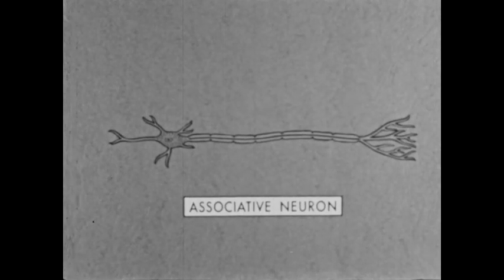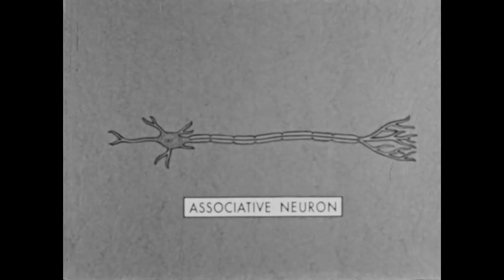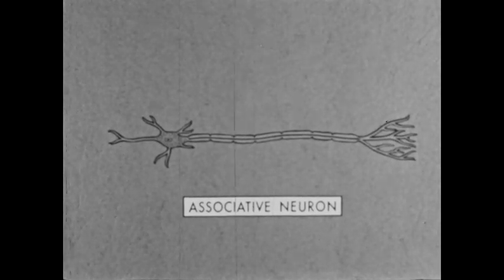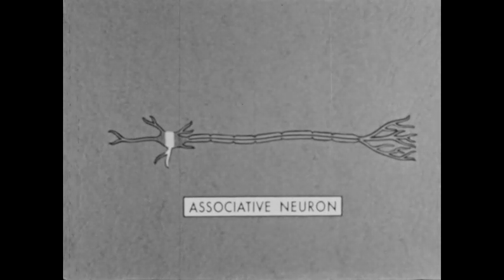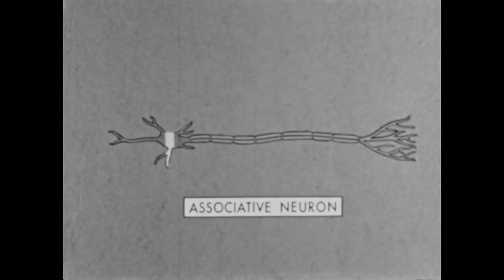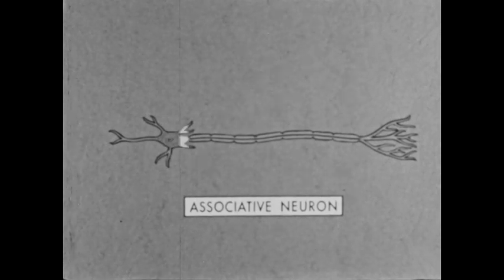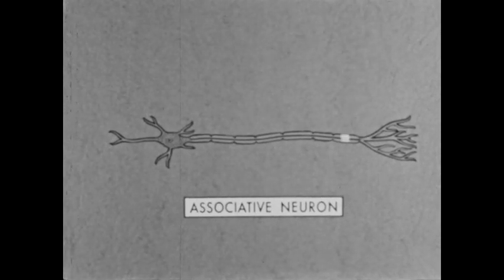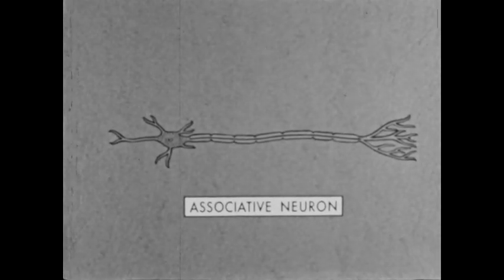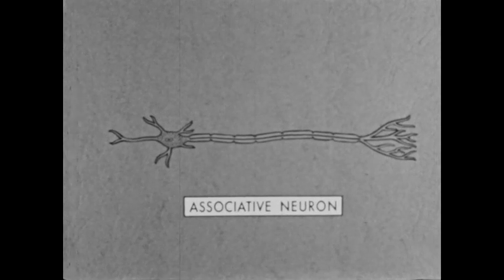Associative neurons receive stimuli impulses from sensory nerves. They determine the responses to be made to stimuli, then pass response impulses onto the motor nerves — thus they associate stimuli and motor impulses.